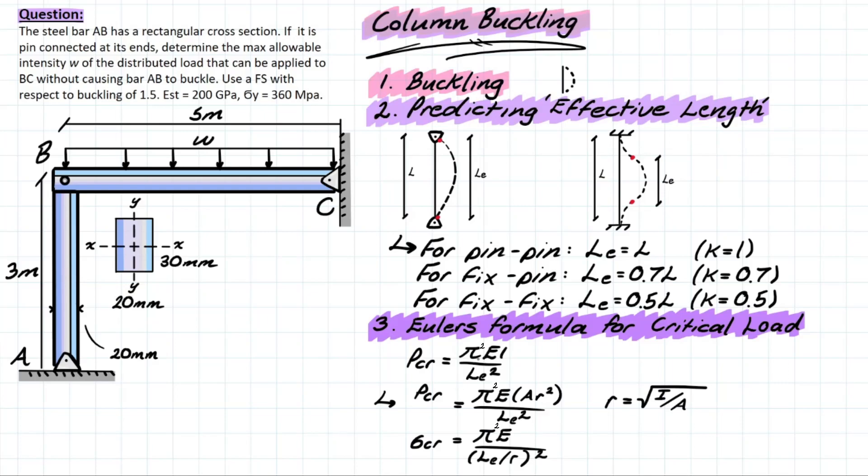The derivation for this equation is a bit tricky, but pretty much all Euler did was relate the internal moment that was developed inside of the column to the deflected shape that was predicted for it.